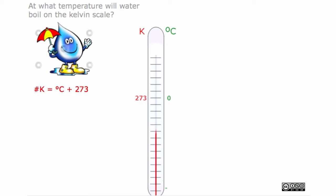From what we can see on the thermometer, when looking at the slide, we notice that 0 degrees Celsius is equal to 273 Kelvin.